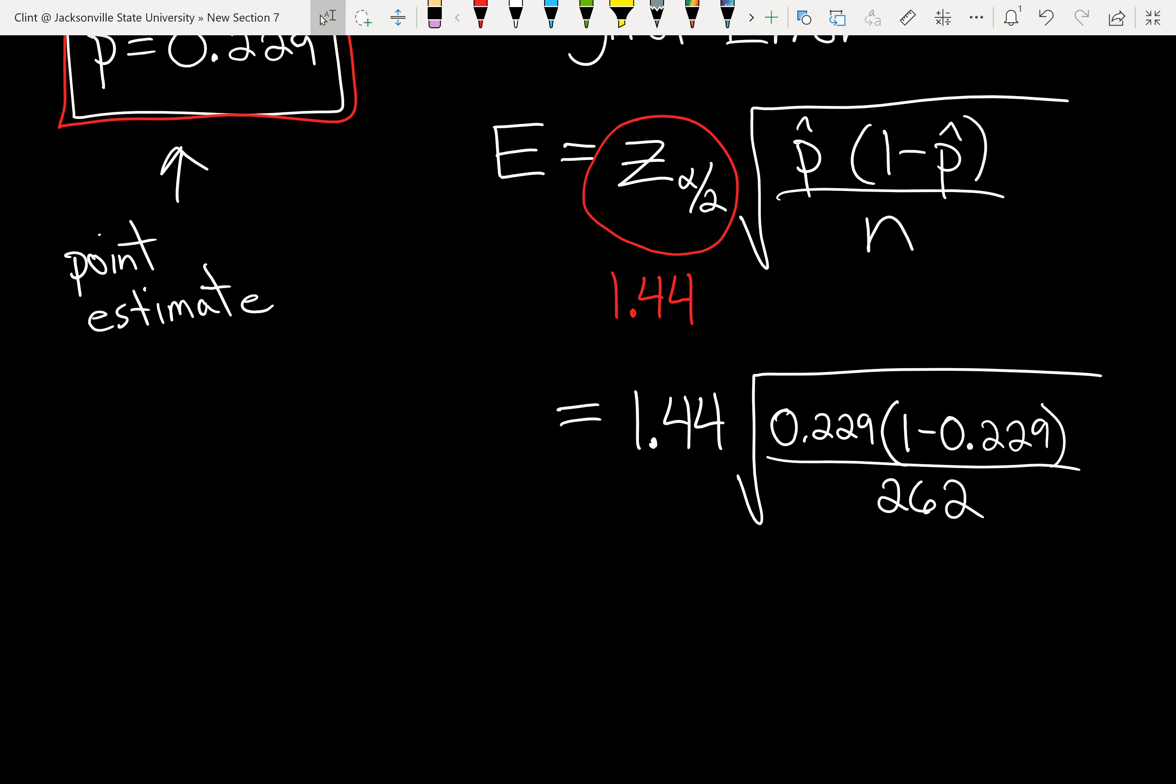So I'm going to do 0.229 times parenthesis 1 minus 0.229, close parenthesis, divided by 262. And then I'm going to hit equal. So there, just if you want to reference it, I get 0.0006738 on and on from there. But then I'm going to take the square root of my previous answer. There I get 0.025959 something.